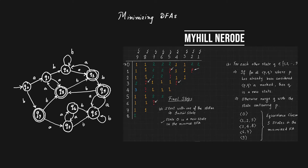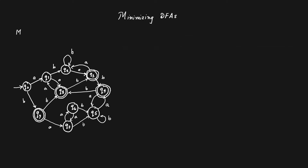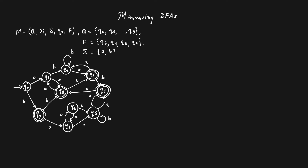We start by looking at the definition of the automaton. We call it M and define it with its set of states Q, the alphabet sigma, delta the transition function, q0 the initial state, and capital F the set of final states. We define the set of states as Q containing q0 to q9, the set of final states F containing q3, q4, q8, and q9, and the alphabet sigma which is {a, b}. The transition function we draw groups the states.